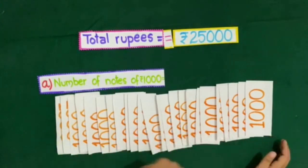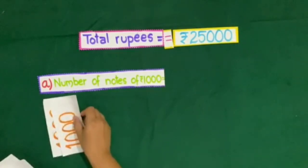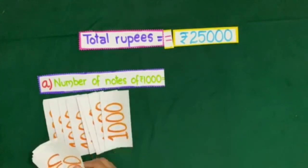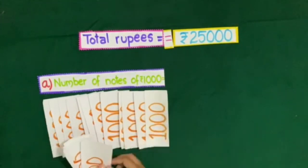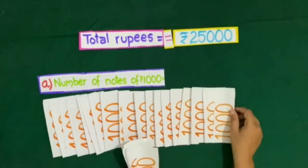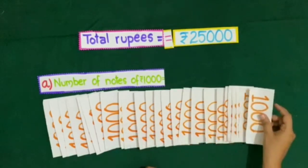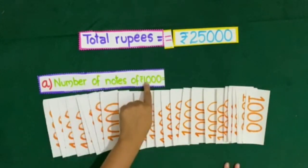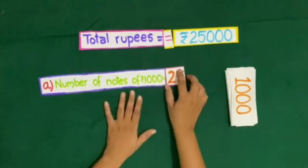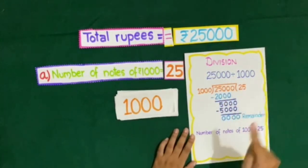So now let us count the number of notes in amount 25,000. Count with me: 1, 2, 3, 4, 5, 6, 7, 8, 9, 10, 11, 12, 13, 14, 15, 16, 17, 18, 19, 20, 21, 22, 23, 24, and 25. So the number of notes of 1000 in 25,000 is equal to 25. The second method is division: 25,000 divided by 1000 is equal to 25.